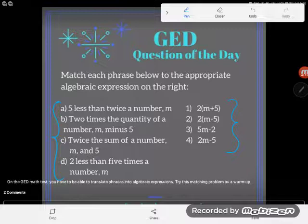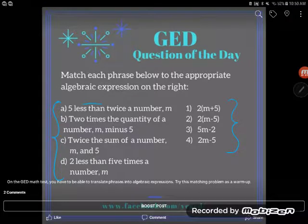So A says five less than twice a number M. Five less than twice a number M. So let's think about this.